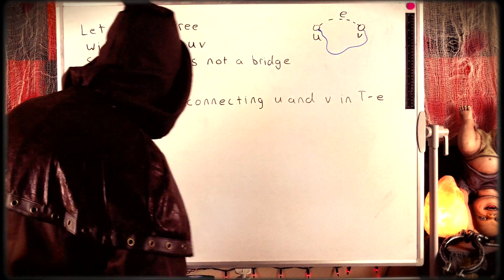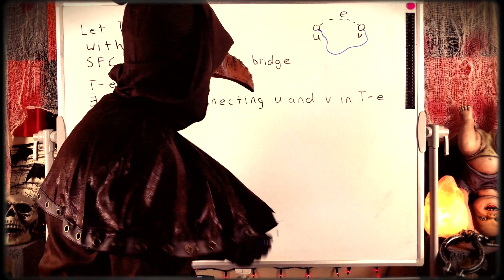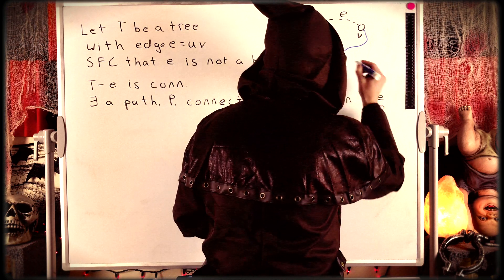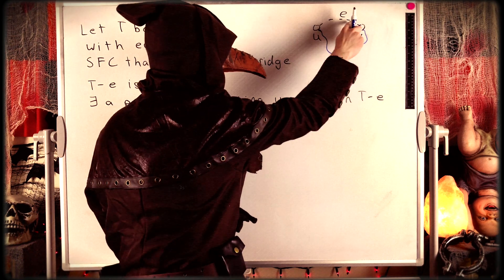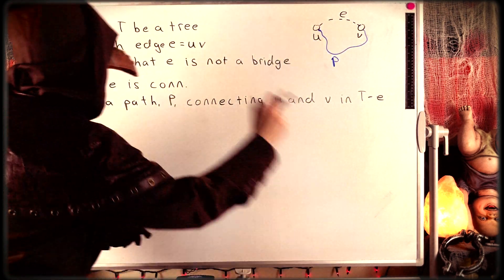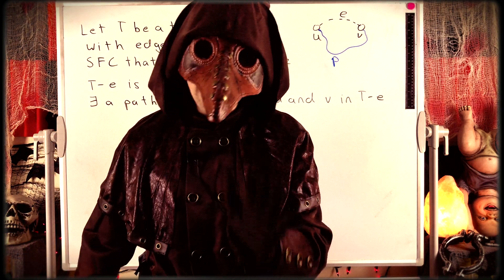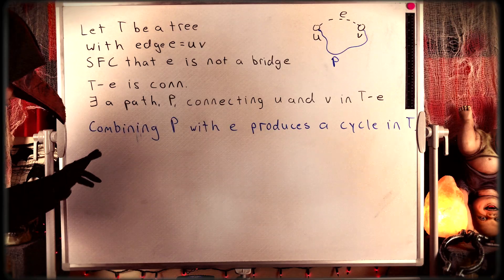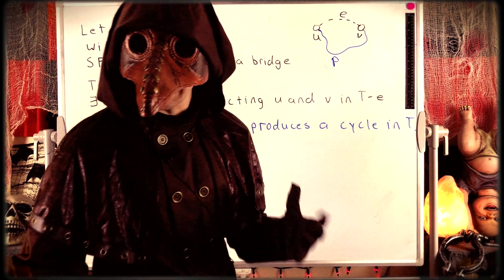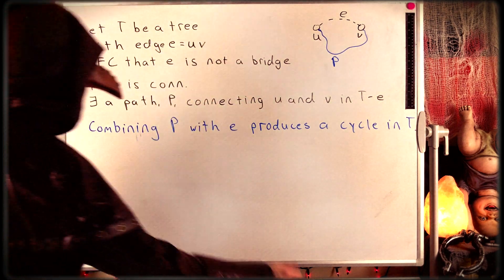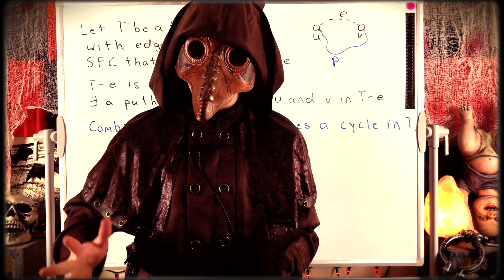Do you see the problem here? What we can do is combine this path P with the edge E to give us a cycle. If we combine that U-V path P with the edge E, we get a cycle in the graph T, which is a contradiction because T is a tree, meaning it can't have any cycles. Combining our path P with the edge E produces a cycle in T — that is a contradiction. Thus our assumption that edge E is not a bridge must be false.